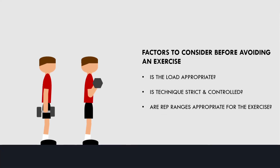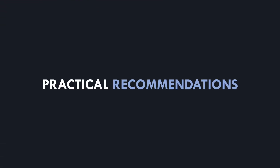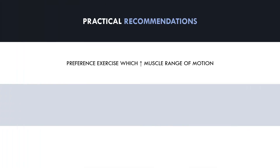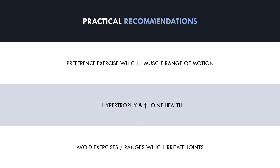So what can we practically conclude from all of this information? Essentially, we want to preference exercises which take the muscle through a larger range of motion over others. With other factors being equal, training a muscle through a greater range of motion will likely result in greater muscle growth and keep trainees healthier over time. However, some trainees may find certain exercises or ranges of motion irritating on their joints due to individual predispositions. In this case, trainees may want to select exercises which avoid certain ranges of motion to reduce local joint stress.